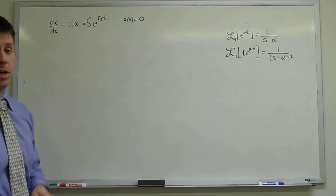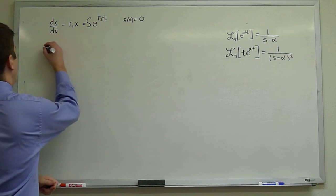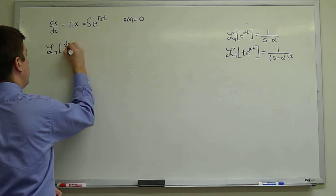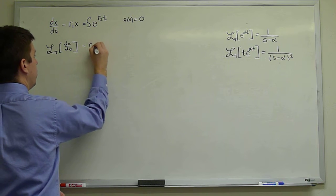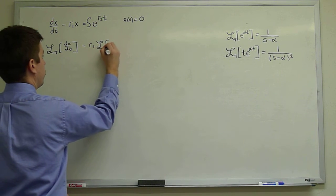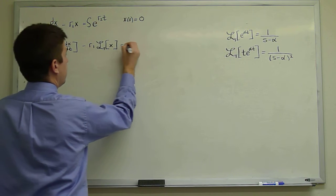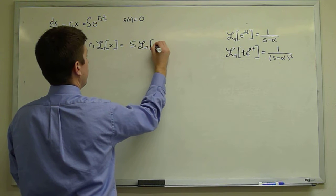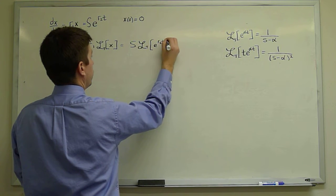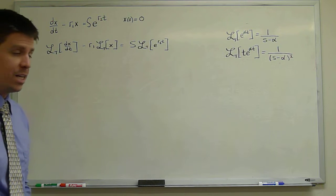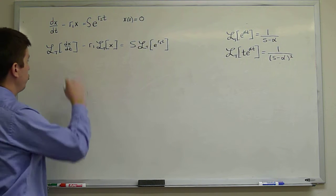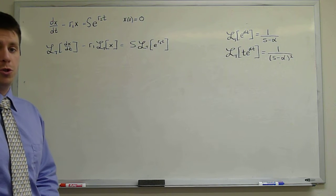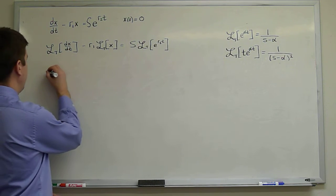We now take the Laplace transform of the whole equation. We take the Laplace transform of dx/dt, minus R1 times the Laplace transform of x, equals a constant S times the Laplace transform of e^(R2·t). As we saw, when we take the Laplace transform of a derivative, we can use integration by parts to reduce that to multiplication by S.